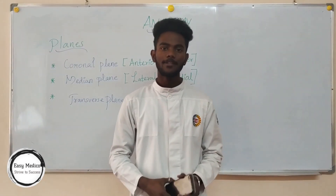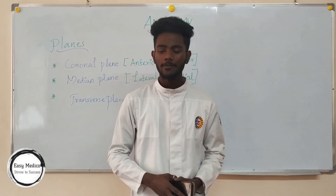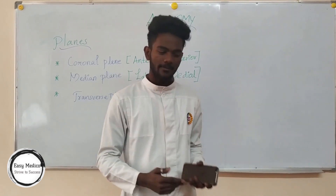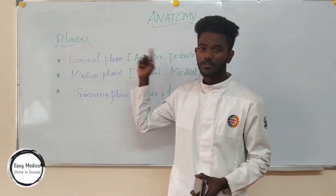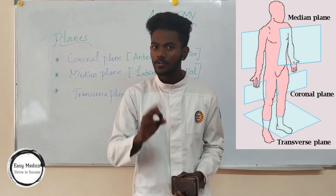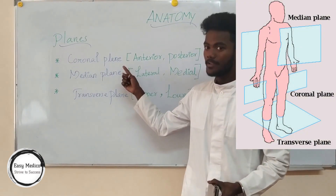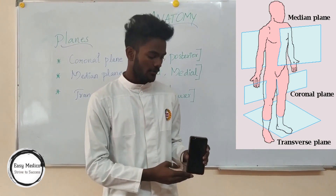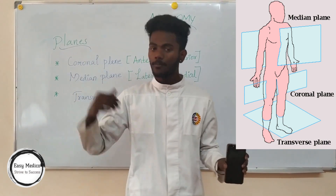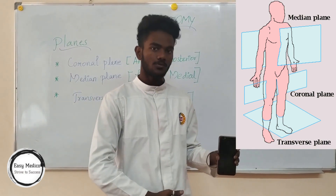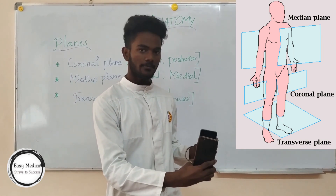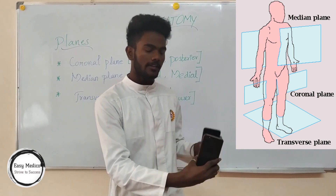Now let's talk about planes. We need to discuss anterior, posterior, lateral, and medial. There are three important planes: the coronal plane, the median plane, and the transverse plane. The coronal plane passes through the body dividing it into two parts — the front part (anterior) and the back part (posterior). The median plane passes through dividing the body into left side and right side.